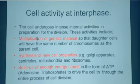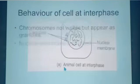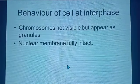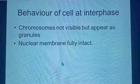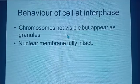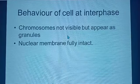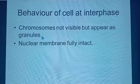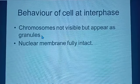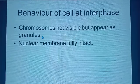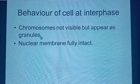These are the key events that occur during the process of interphase. The chromosomes are not visible, but appear as granules. Remember, we said that chromosomes are made of fine filaments, which we call the chromatin.